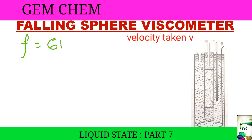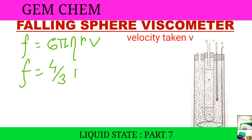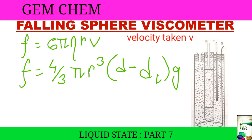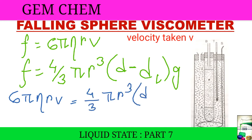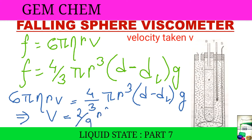The force is given by f = 6π eta r v. If the spherical body falls under gravity, the gravitational force equals (4/3)π r³ times the difference in density of the solid sphere (d) and the liquid (d_L) times g. When these two forces are equated, we get: 6π eta r v = (4/3)π r³ (d − d_L) g.